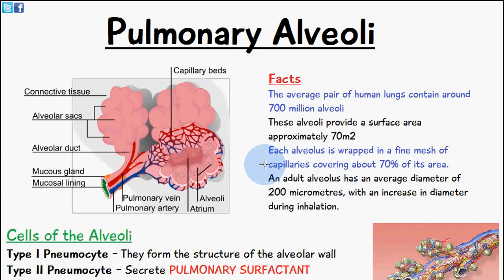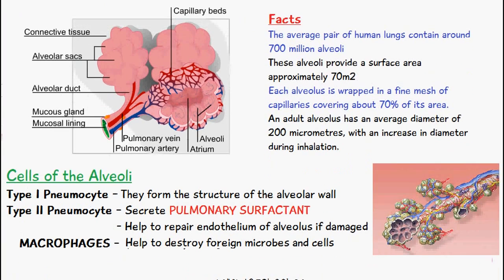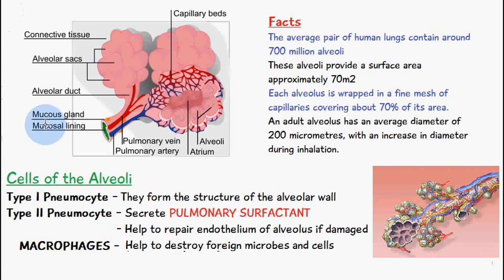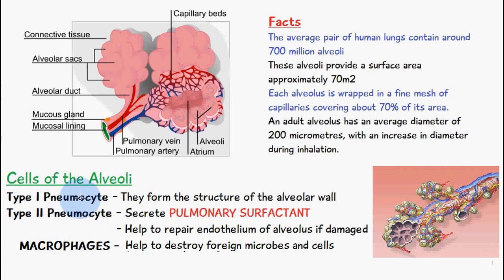When you take a big breath in, the alveoli expand because they are rich in elastin, allowing them to stretch and increase in diameter. Now let's talk about the cells of the alveoli. There are three main cell types. They have a variety of names, but we'll call them Type 1 pneumocyte and Type 2 pneumocyte - Type 1 can also be called squamous cells, and Type 2 can also be called great alveolar cells. Type 1 pneumocytes form the structure of the alveolar wall; they are squamous and make up the main structural lining.